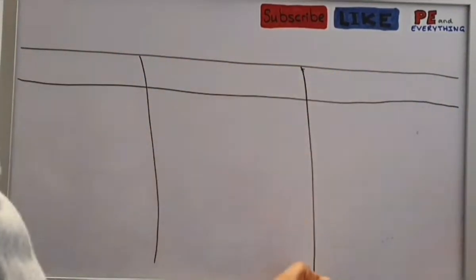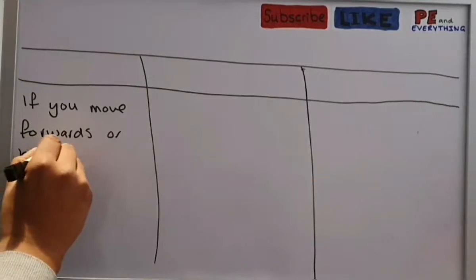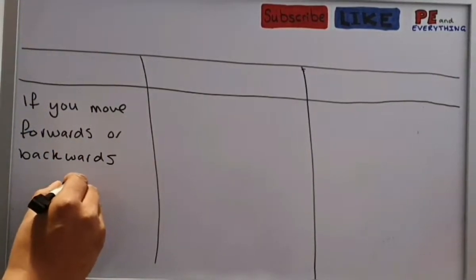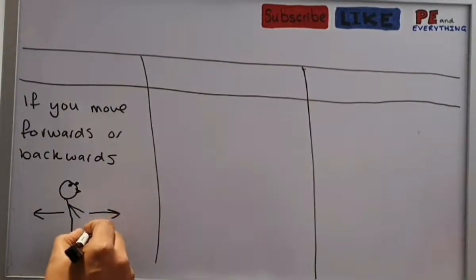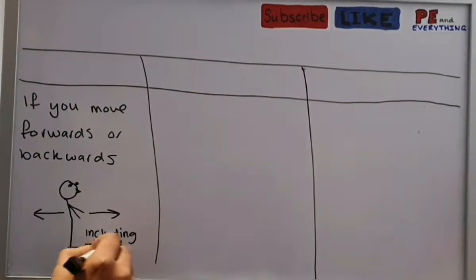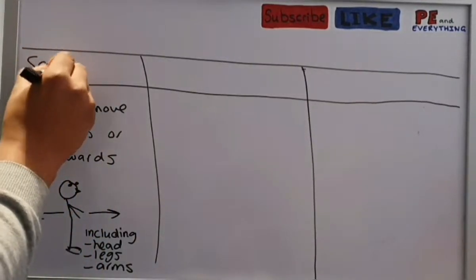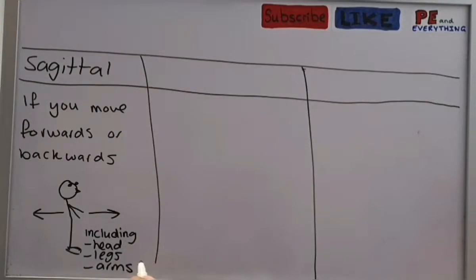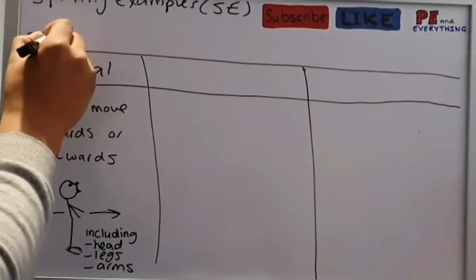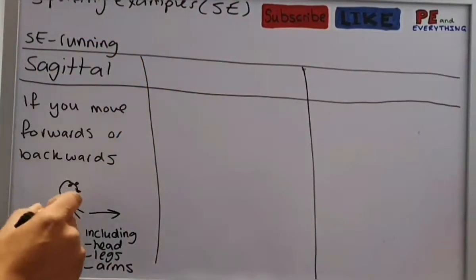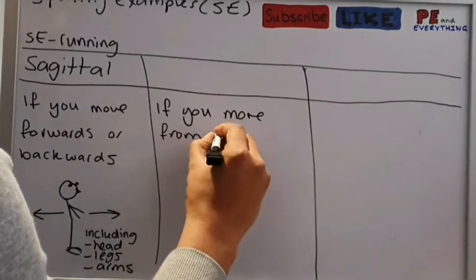Let's look at this further with a nice little table. First, if you move forwards or backwards, as this person will demonstrate with arrows, this includes the head, the body, the legs, and the arms. If they move forwards or backwards, that is moving in the sagittal plane. So if you move your head, your feet, your arms, your legs forward, that will be in the sagittal plane. A sport example would be running because you have to go forwards.